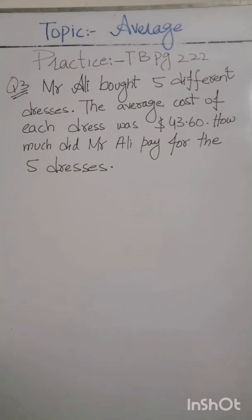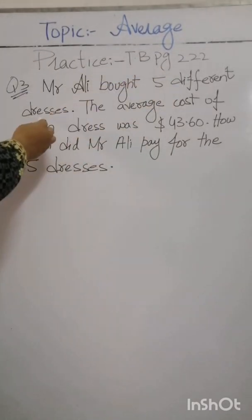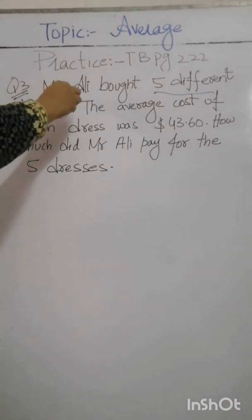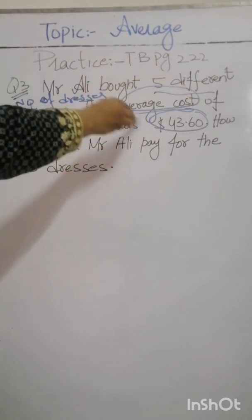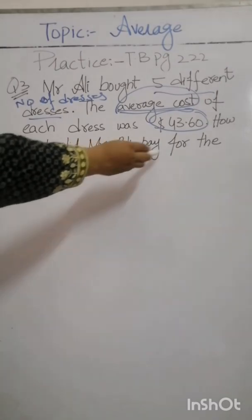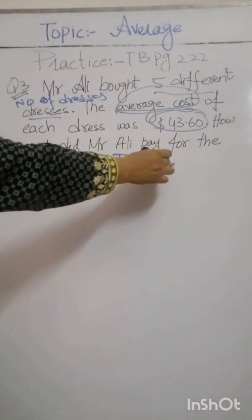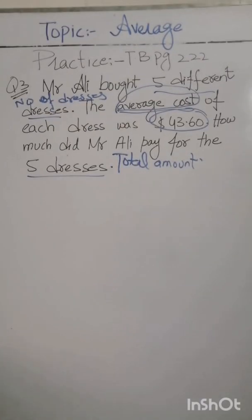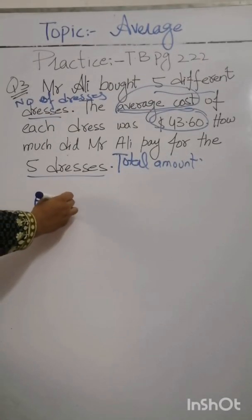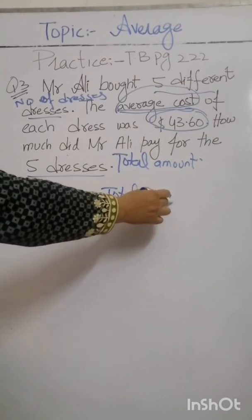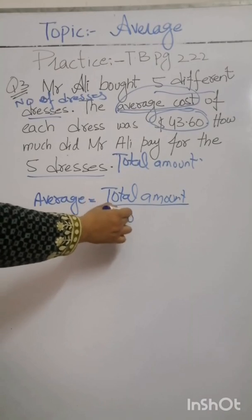We have question number 3. Mr. Ali bought 5 different dresses. We have the number of dresses and the average cost of each dress was $43.60. We have the average cost given. How much did Mr. Ali pay for the 5 dresses? Now we have to find the total amount. The formula for average is: average is equal to total amount divided by number of dresses.